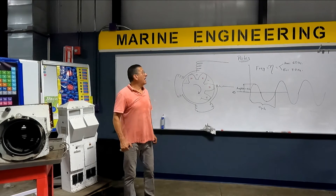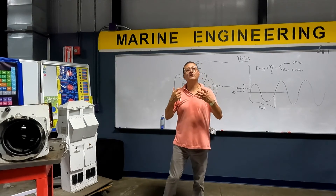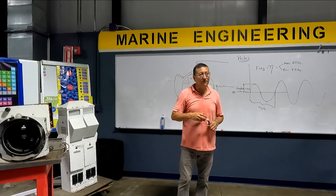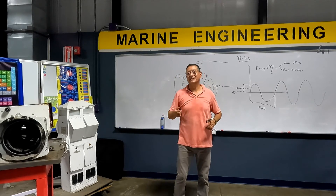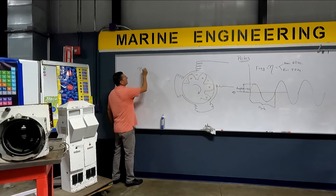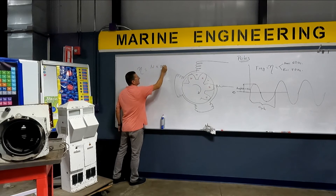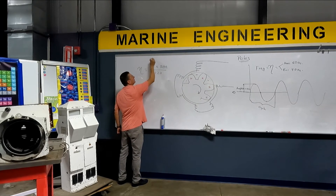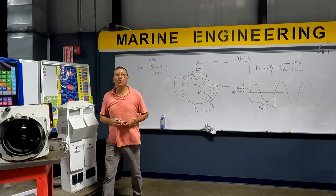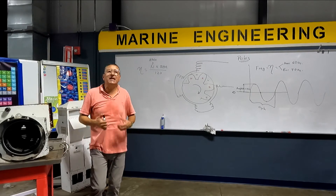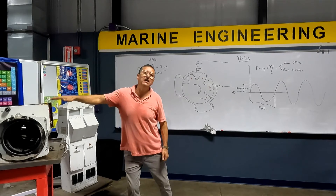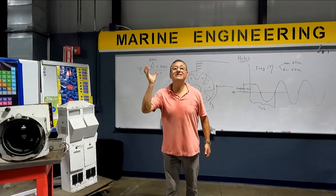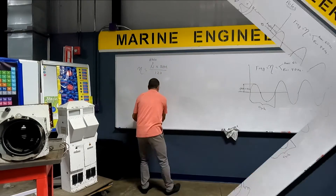Now let's understand the formula for frequency — it's the same formula used to calculate frequency produced by a propeller when spinning. The formula is: frequency equals the number of poles times the RPMs divided by 120. Let's calculate how many RPMs are needed in an American generator to produce 60 hertz.